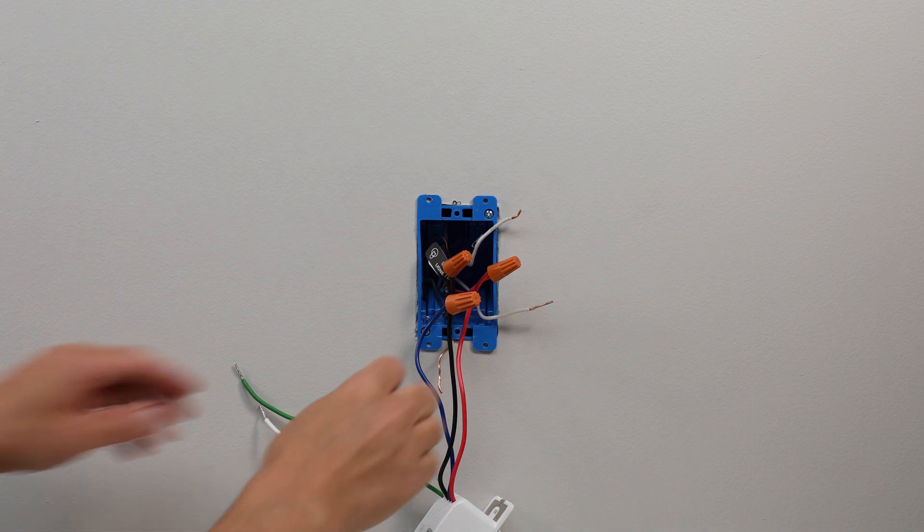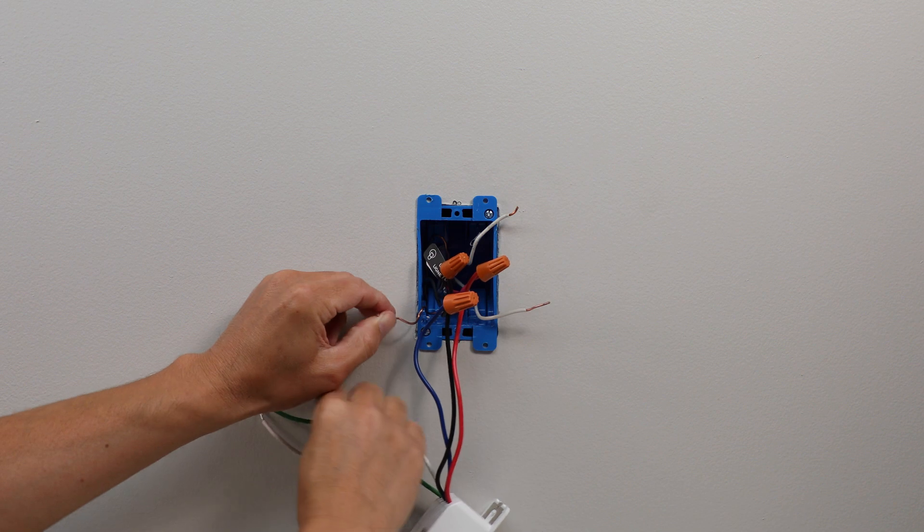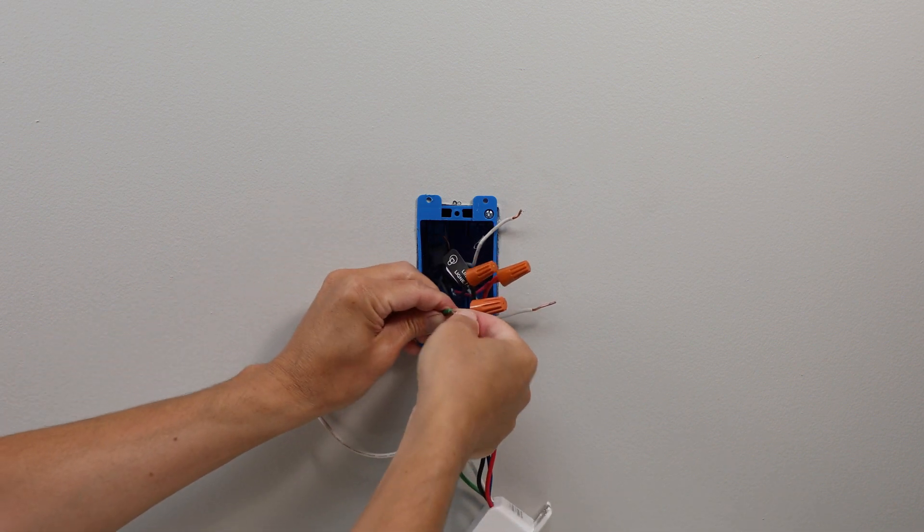Next, use a wire nut to connect the green wire from the switch to the bare copper or green ground wire in the wall.